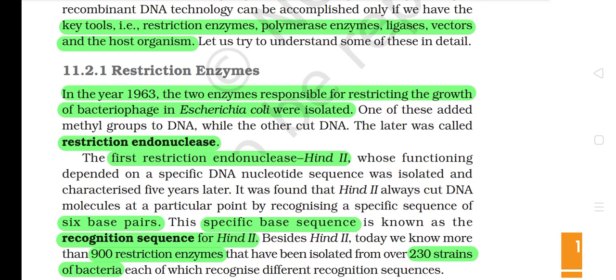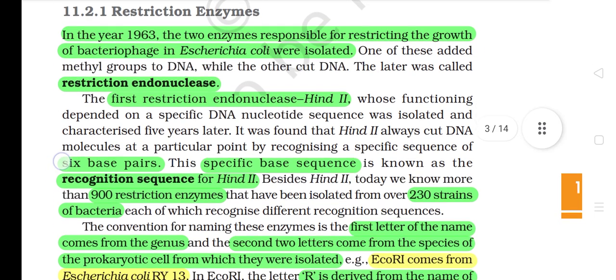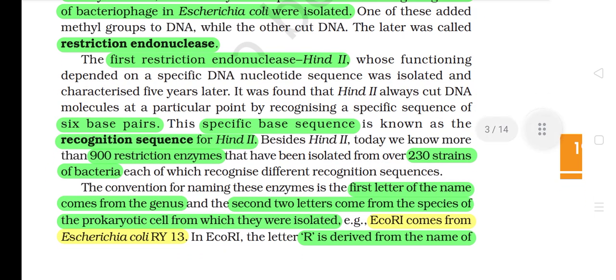11.2.1 Restriction Enzymes. In the year 1963, two enzymes responsible for restricting the growth of bacteriophage in E. coli were isolated. One of these added methyl groups to DNA while the other cut DNA. The latter was called Restriction Endonuclease. The first Restriction Endonuclease, Hind II, whose functioning depended on a specific DNA nucleotide sequence, was isolated and characterized five years later. It was found that Hind II always cut DNA molecules at a particular point by recognizing a specific sequence of six base pairs. This specific base sequence is known as the recognition sequence for Hind II.